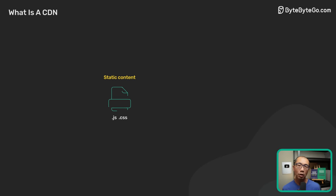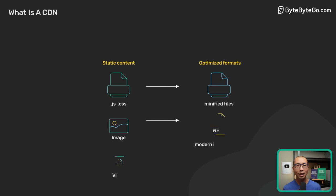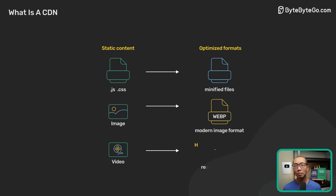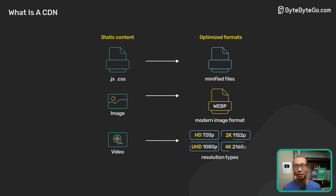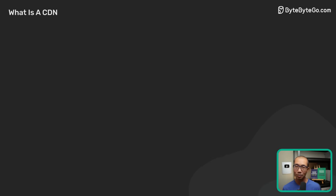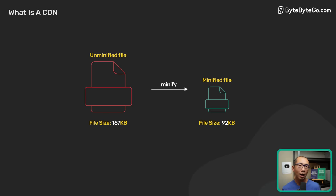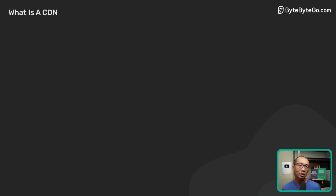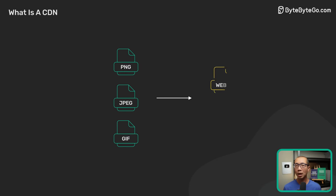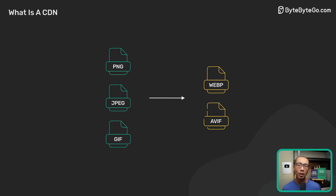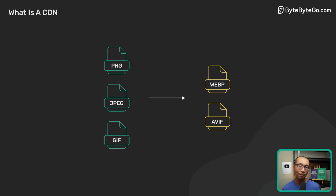A modern CDN can also transform static content into more optimized formats. For example, it could minify JavaScript bundles on the fly, or transform an image file from an old format to a modern one like WebP or AVIF.